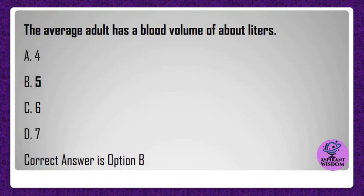The average adult has a blood volume of about how many liters? A) 4, B) 5, C) 6, D) 7. Correct answer is option B.